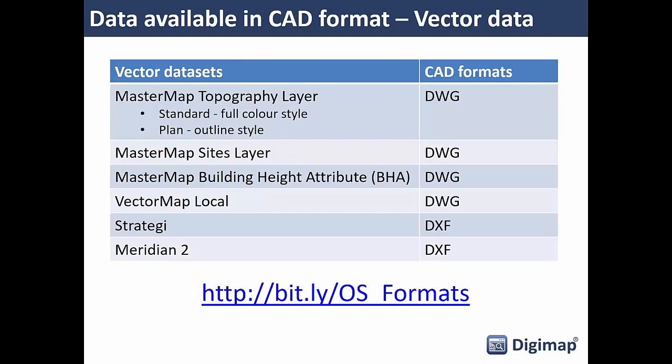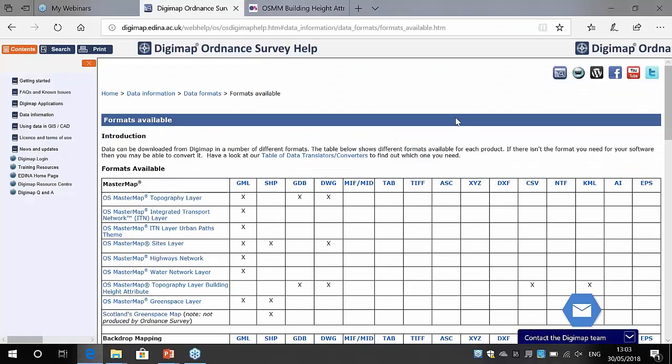First, the data available in CAD format. There's a whole bunch of data you can get out of Digimap in native CAD format. Some of it we do translations to make available; some is provided by data suppliers in CAD-friendly format. We're primarily looking at Ordnance Survey data today but will also mention other products. There's a table listing vector datasets available in CAD formats, and a link to our help page listing all Ordnance Survey datasets and their available formats.